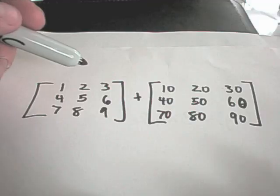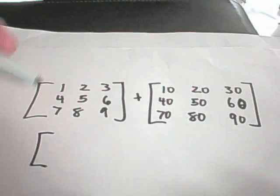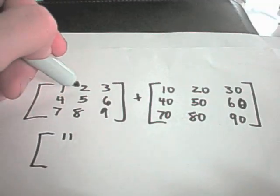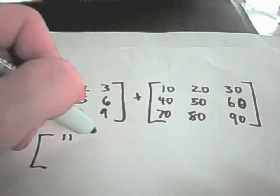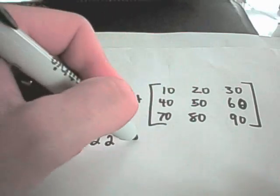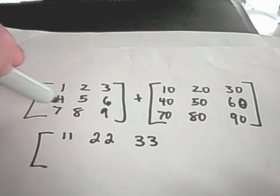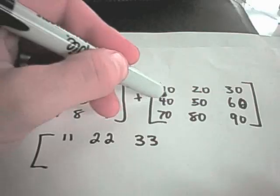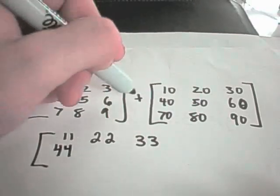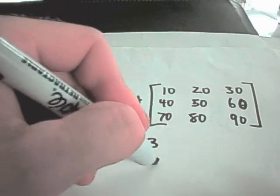They don't have to have the same number of rows and columns. So maybe we'll do one more like that. But you add 1 plus 10 and get 11. 2 plus 20 and get 22. 3 plus 30, you'll get 33. 4 plus 40, so now I'm adding the first entry in the second row plus the first entry in the second row on the other matrix. I'll get 44. 5 plus 50 will give me 55. 6 plus 60 will give me 66.